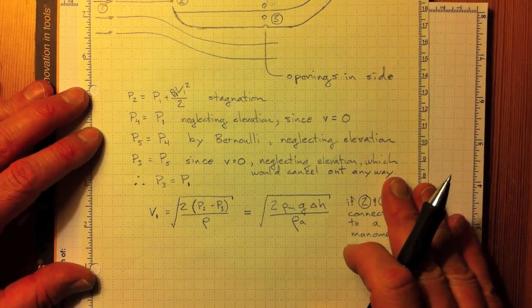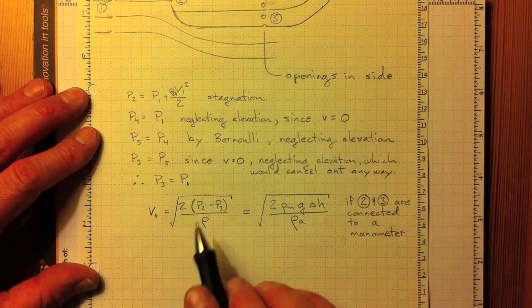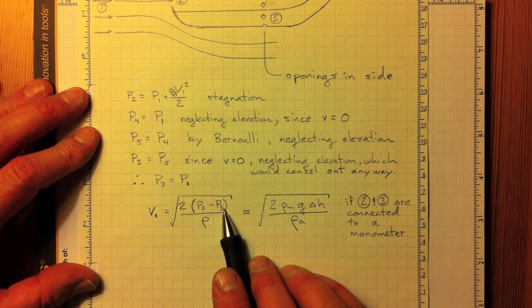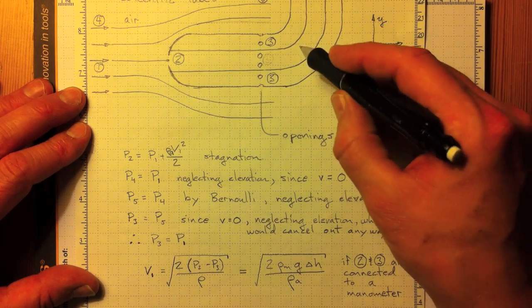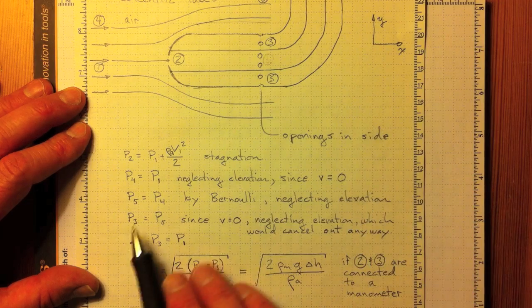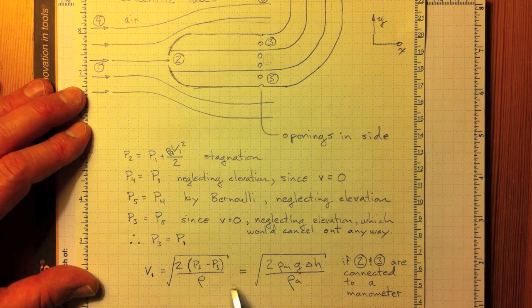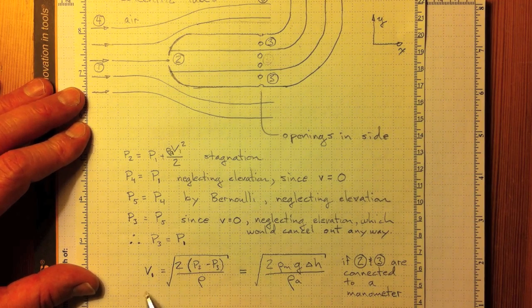This has the advantage that when we go to make the measurement, we just need to measure the difference between P2 and P3. So if we connect each of these tubes to opposite sides of a manometer, that differential pressure measurement gives us a direct indication of the velocity.